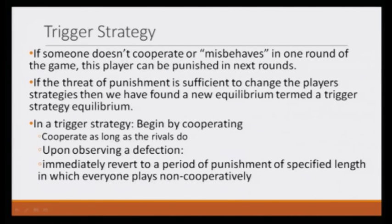So let us talk about some of the contingent strategies. One very popular one that we will study today is called trigger strategy. If someone does not cooperate or misbehaves — let us say we make a deal to cooperate — and if someone does not cooperate or misbehaves in one round of the game, then this player can be punished in the next round. So if the threat of punishment is sufficient to change the player's strategy, then we have found a new equilibrium and we can call them trigger strategy equilibrium.